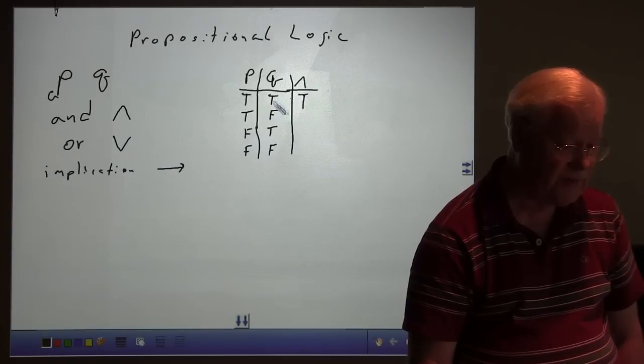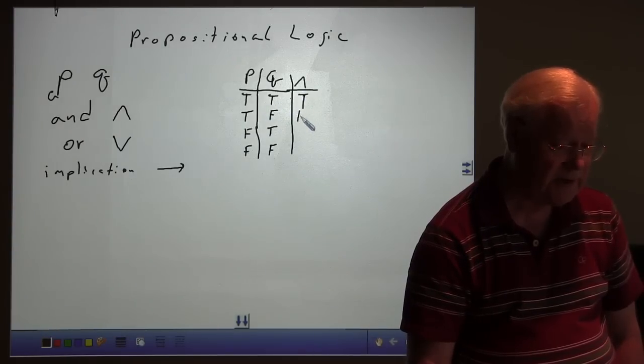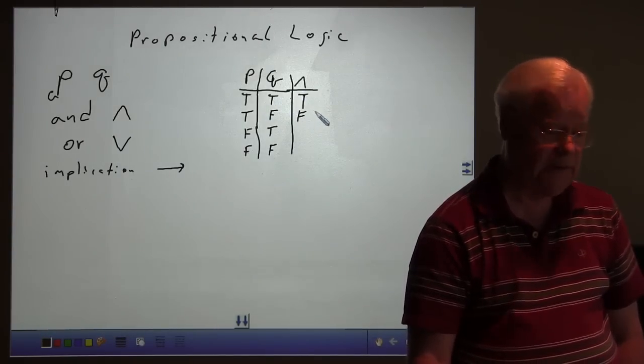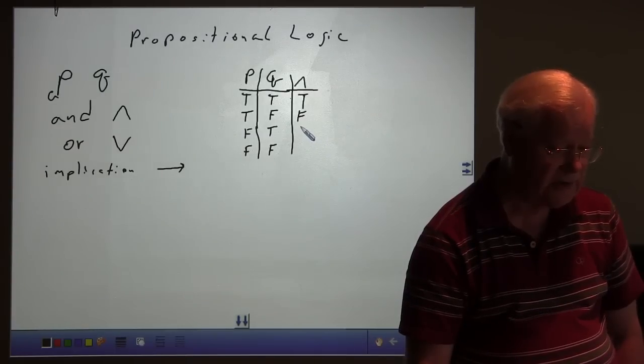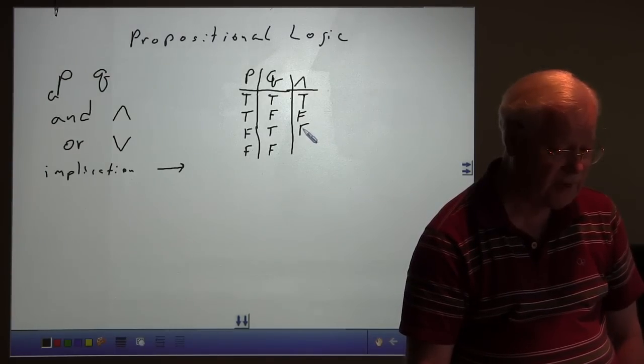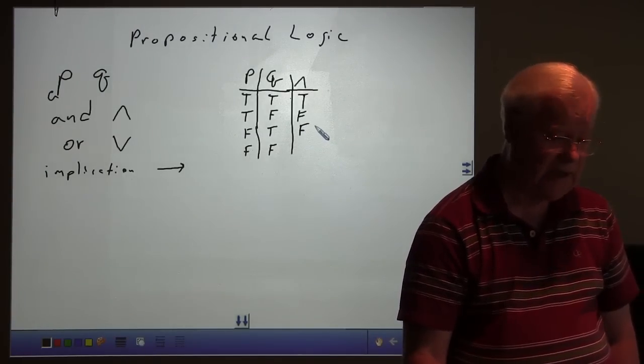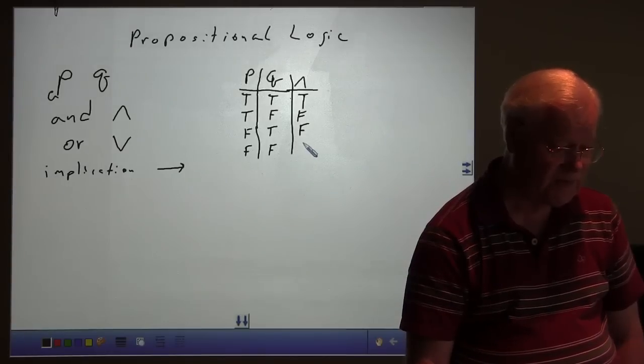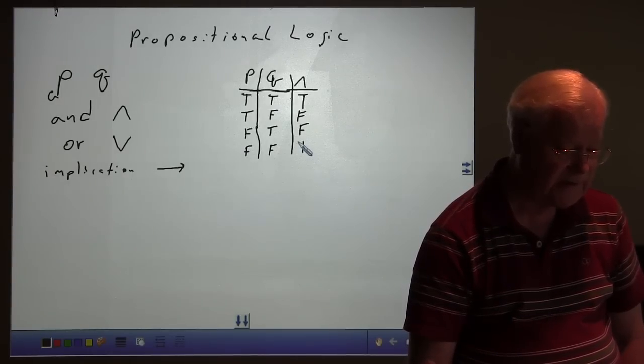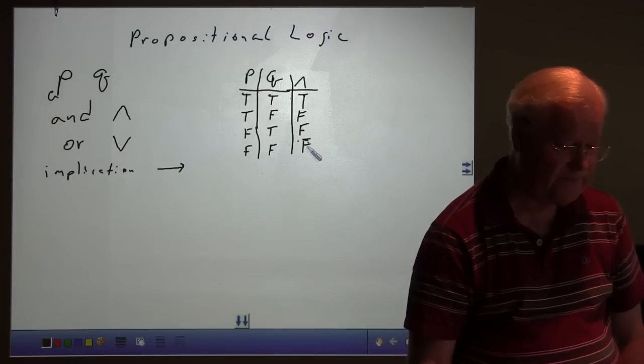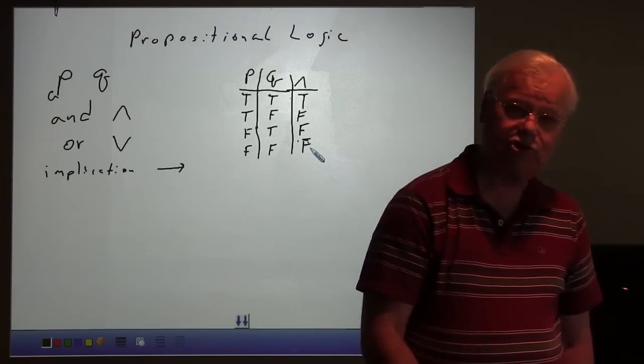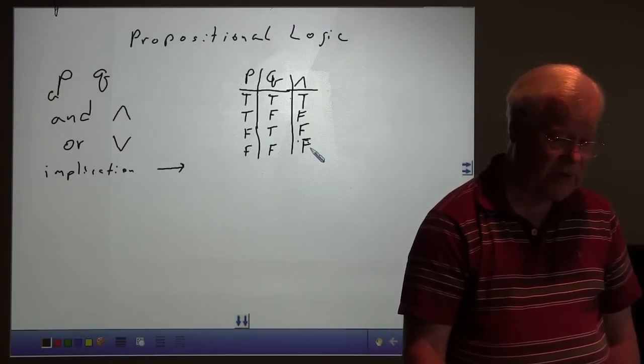But if one of them is false, then the AND is false. It doesn't matter which one is false. If either one of them is false, the AND is false. If both of them are false, obviously, the AND is also false. So the AND is true only when both are true.